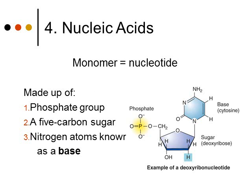The monomer for both types of nucleic acids is called a nucleotide. A nucleotide is composed of three main parts: a phosphate group, which is one of those functional groups; a five-carbon sugar in the middle; and a base made up of nitrogen atoms. There are different bases that we're going to look at.